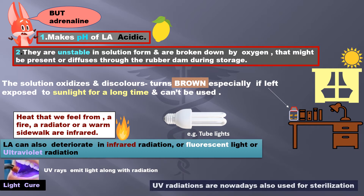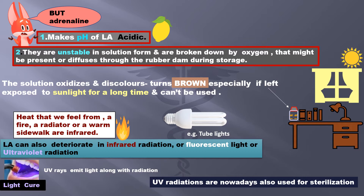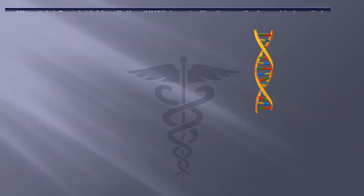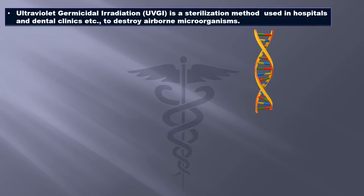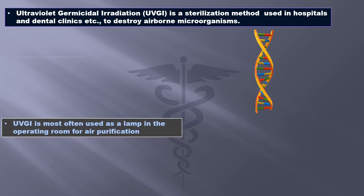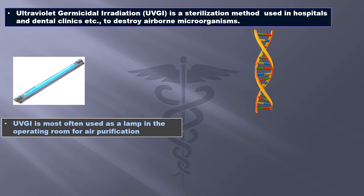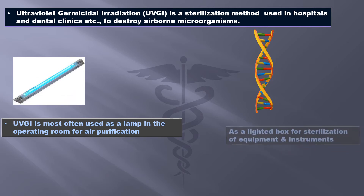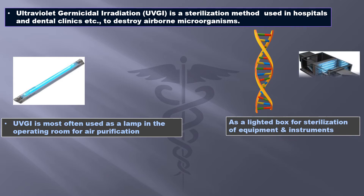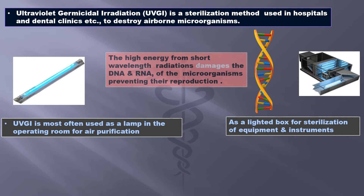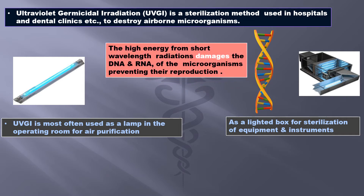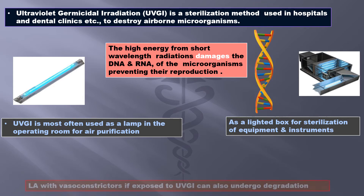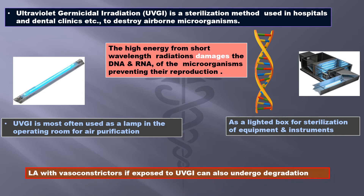Ultraviolet radiations are nowadays also used for sterilization. Ultraviolet germicidal irradiation (UVGI) is a sterilization method used in hospitals and dental clinics to destroy airborne microorganisms — most often used as a lamp in operating rooms for air purification, or as a lighted box for sterilization of equipment. These high-energy, short-wavelength radiations damage the DNA and RNA of microorganisms, preventing reproduction. The key point is that LA with vasoconstrictors, when exposed to UVGI, can also undergo degradation.